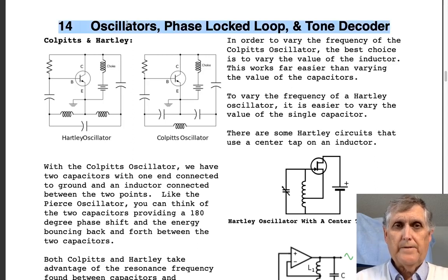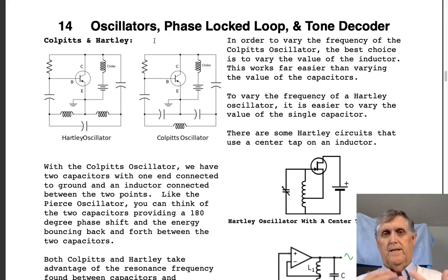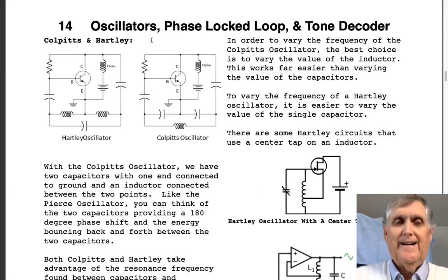Continuing along Chapter 14: Oscillators, Phase-Locked Loop, and Tone Decoder. We're going to dig into the different types of oscillators, and it's going to be easier than you think because it's fairly easy to recognize certain things. The first two are going to be the Colpitts and the Hartley, and I have to warn you up front, sometimes I've accidentally called it the Harley. I've got motorcycles on the mind when I say that.